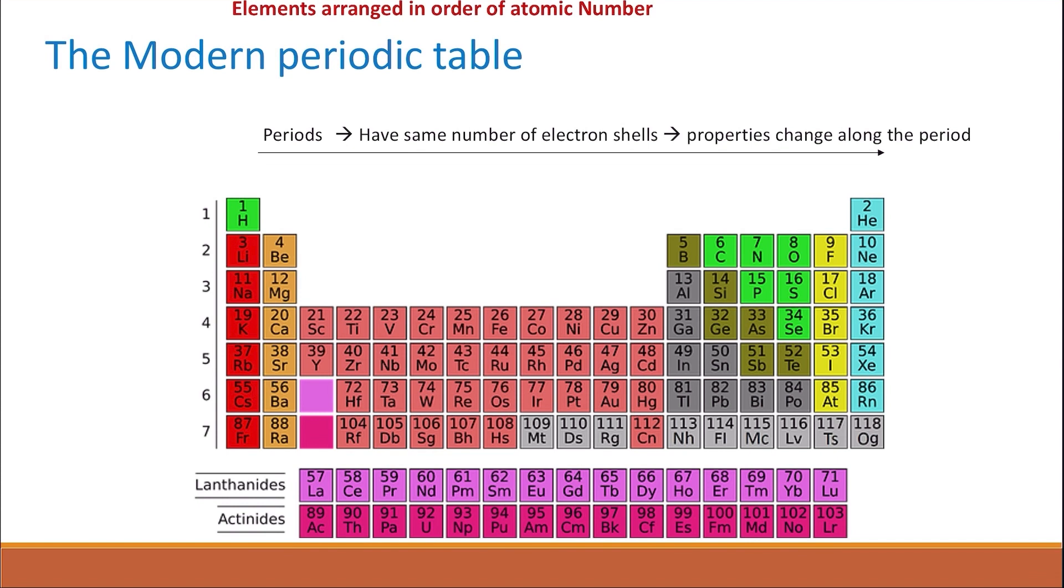The columns are called groups. Elements in the same group have the same number of outer shell electrons, so they have similar chemical properties.